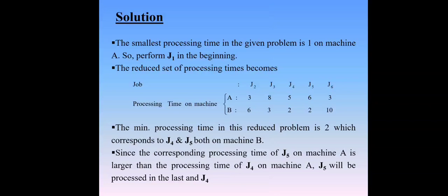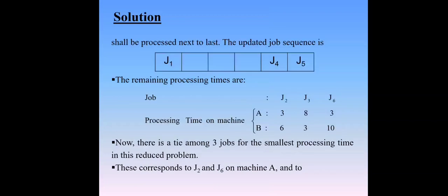The reduced set of processing times becomes — that means J1 is neglected. Remaining jobs are J2, J3, J4, J5, J6. Again we find out the minimum processing time in this reduced problem, which is 2, corresponding to J4 and J5, both on machine capital B. Since the corresponding processing time of J5 on machine A is larger than the processing time of J4 on machine capital A, J5 will be processed last and J4 shall be processed next to last.